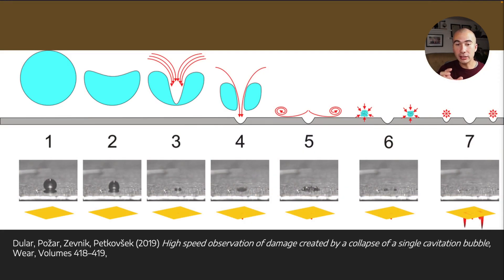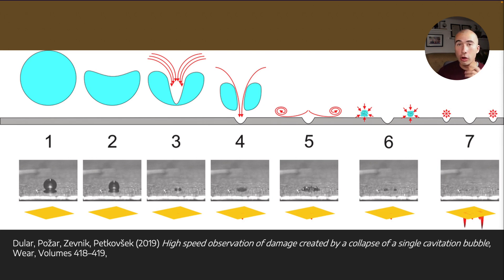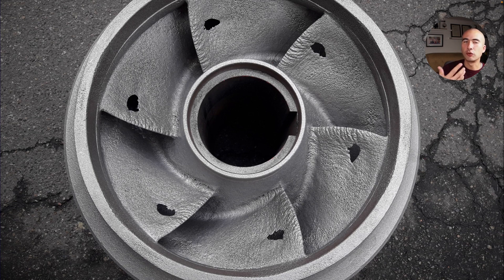This has actually been visualized in studies. Using a very high-speed camera — you can look at the pictures here — this is from a 2019 paper where you can actually see the bubble collapsing, and it causes minor indentations in the surface. Over time, that is going to cause substantial surface damage. You've probably seen examples of cavitated water propellers — that's a very common circumstance where you'll see this.